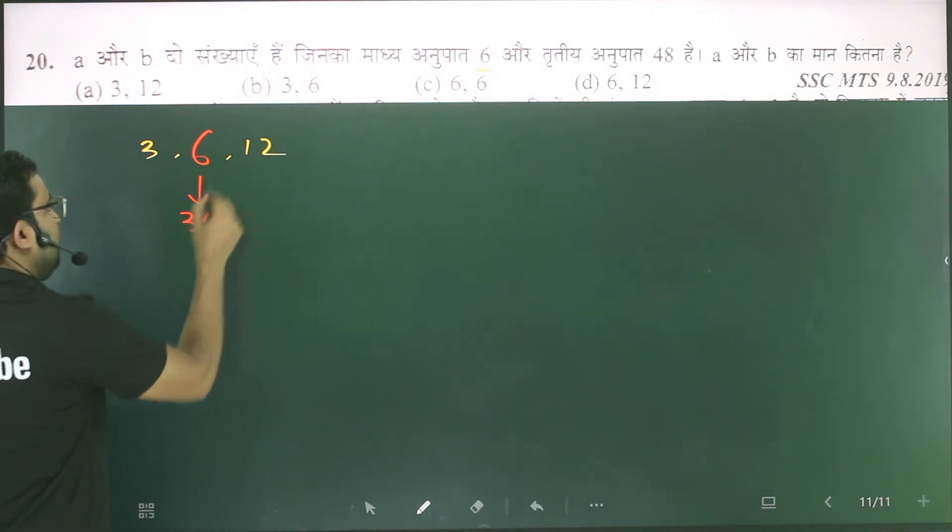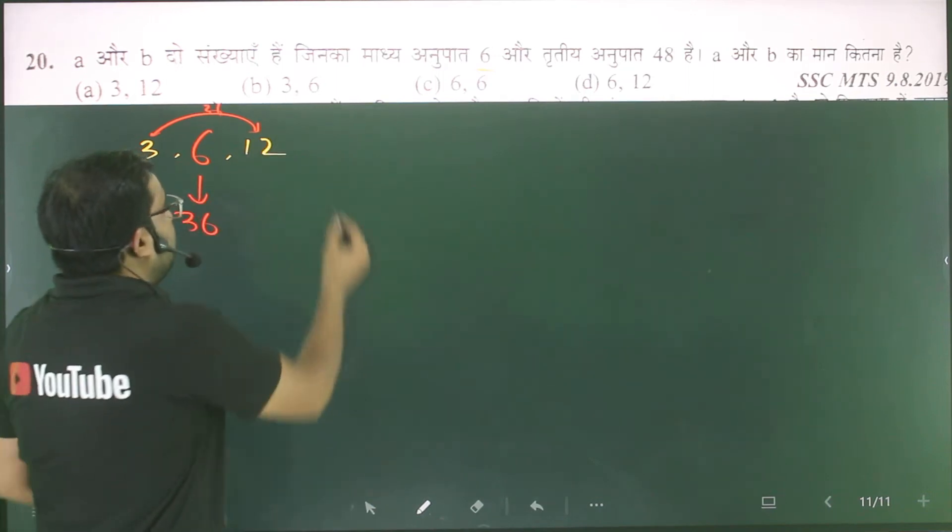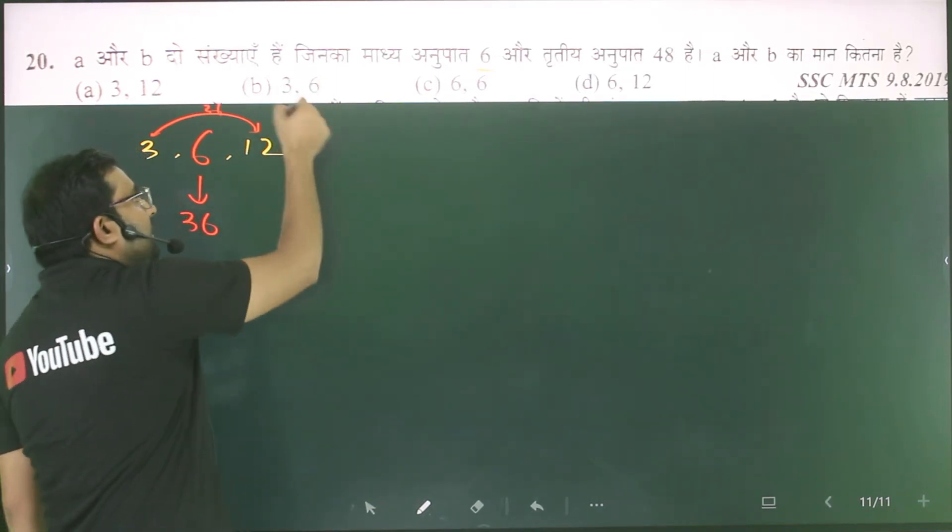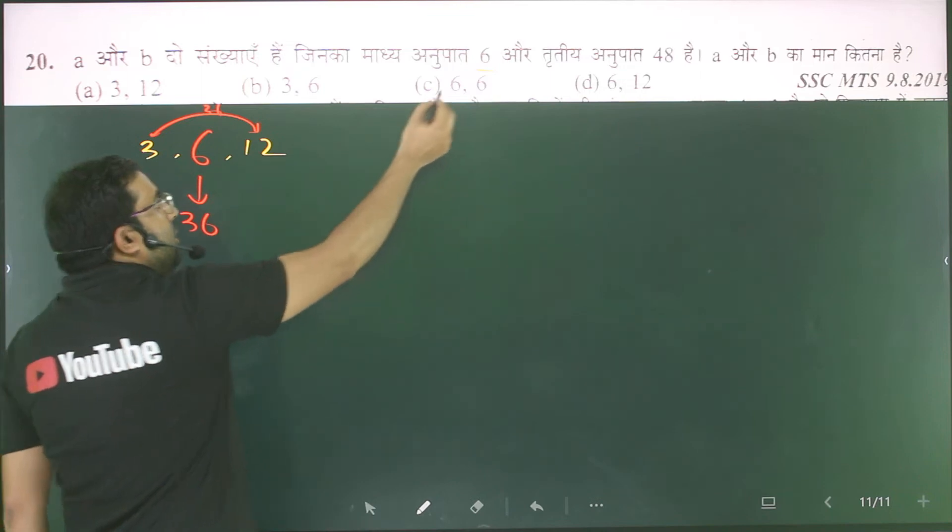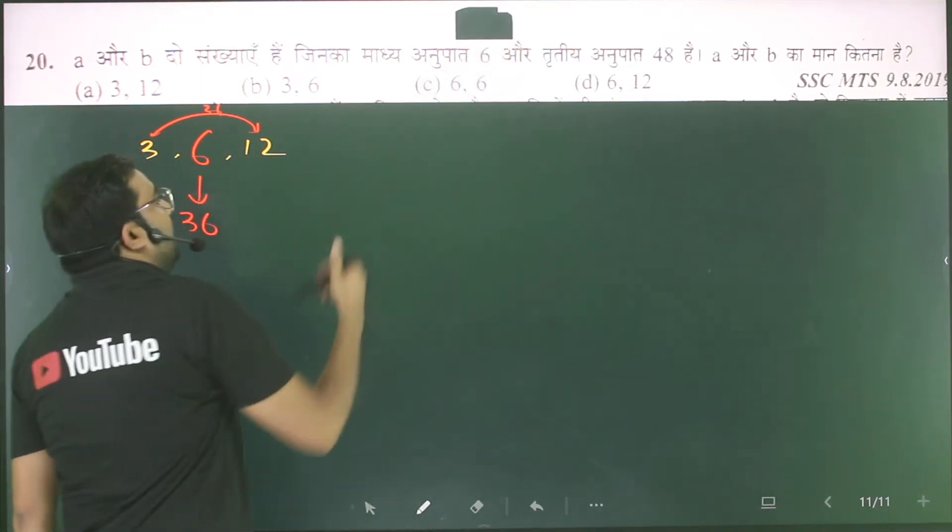6 square is 36. To be able to do it with each other, 12 and 36, this is the option. How much is it? How about 3 and 6? It's 18, and what is the value? 36.